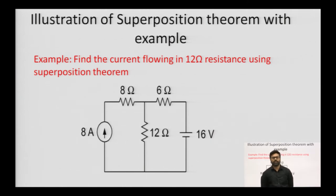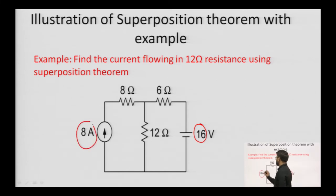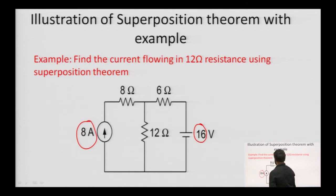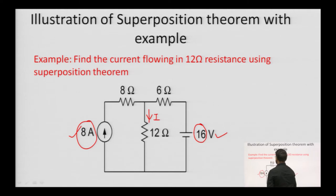Let's see how we apply the superposition theorem with a circuit that has two sources: a 16V voltage source and an 8A current source. We need to find the current I in the 12Ω resistor. According to the superposition theorem, first we consider the 16V source — when doing so, the 8A current source is open-circuited. Then when we consider the 8A source, the 16V voltage source is short-circuited.